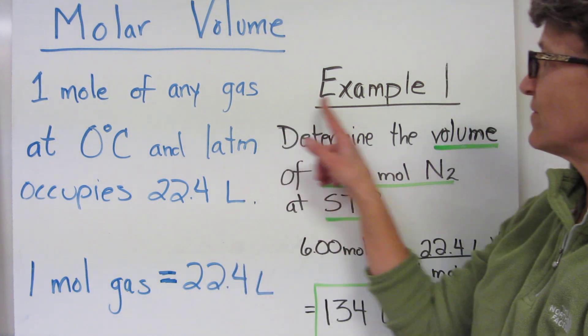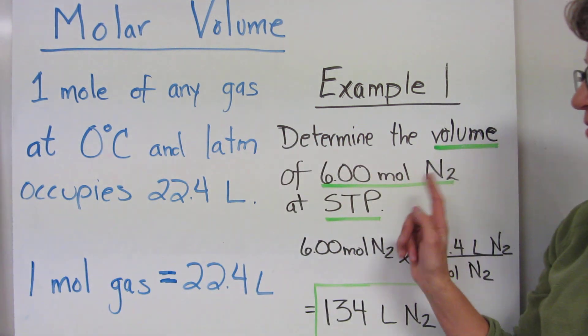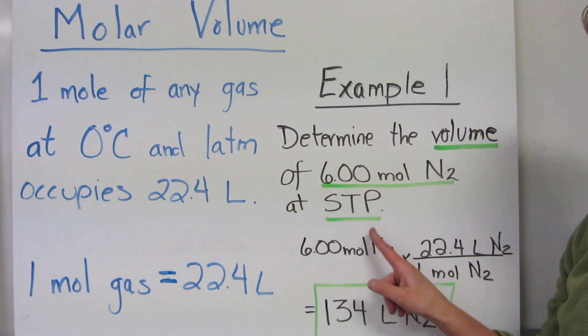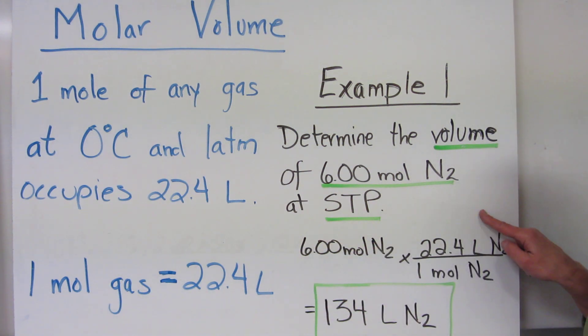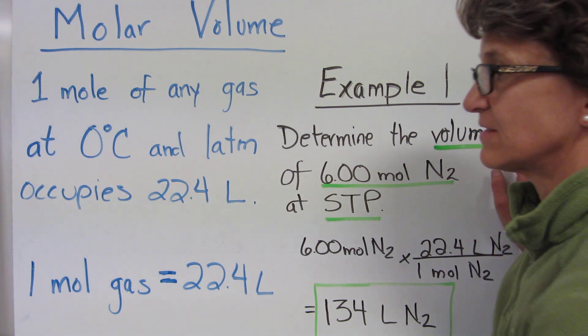In our first example, determine the volume of six moles of nitrogen at STP. So we're changing moles of nitrogen to liters of nitrogen. Multiply by 22.4, cancel your moles of nitrogen. And when you calculate, you'll have 134 liters of nitrogen when you round to three sig figs.